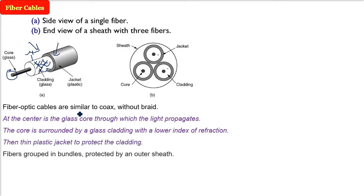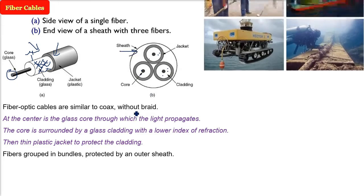Then we have the thin plastic jacket to protect the cladding, and then we have the grouping in bundles. Fibers are grouped in bundles and there is an outer protective sheath. That is how it is protected.